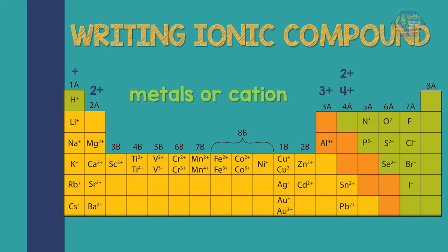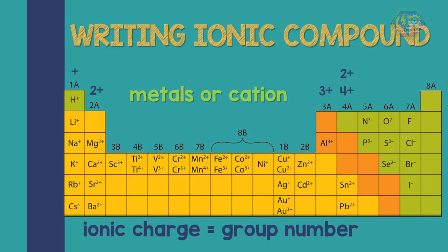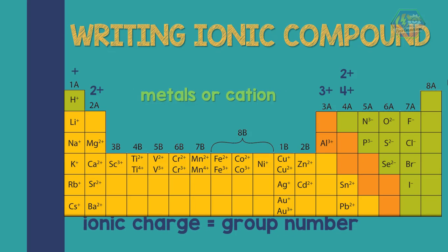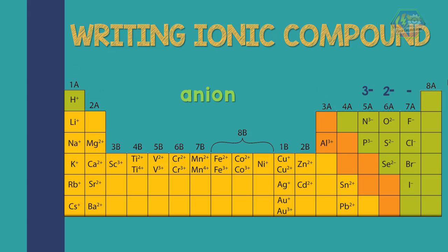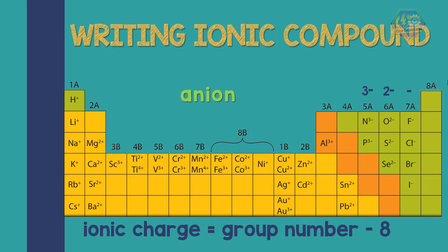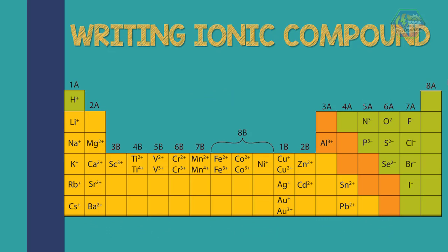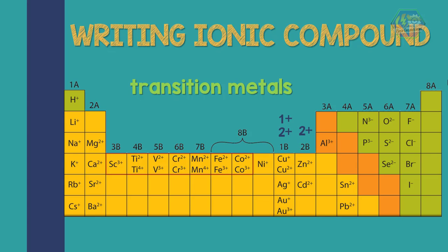For metals or cations, their group number is also their ionic charge. For anions, their ionic charge is their group number minus 8. For transition metals, Group 1B has an ionic charge of either 1+ or 2+. Group 2B has a charge of 2+. Groups 6B, 7B, and 8B have charges of either 2+ or 3+.